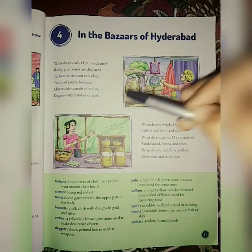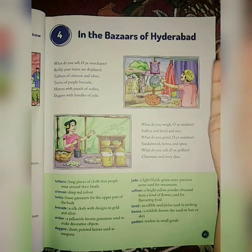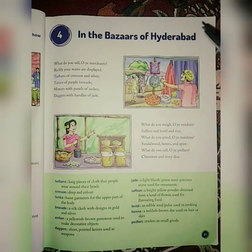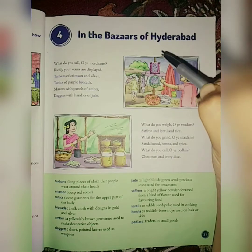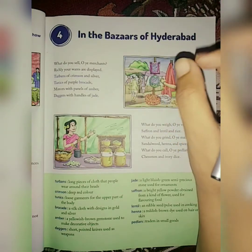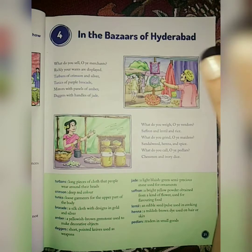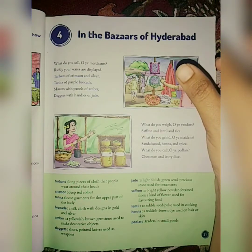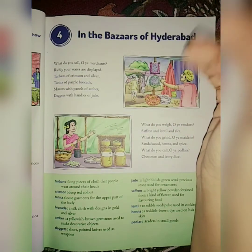The poem begins with the poet's question to the merchant about what they are selling. She sees that the goods are displayed nicely to attract the buyers. The merchant replied that they are selling crimson — it means a deep red color — silver colored turbans, purple brocade tunic, mirrors with amber frame, and daggers with handles made of jade, which means a green stone.